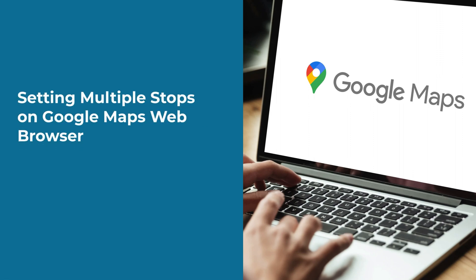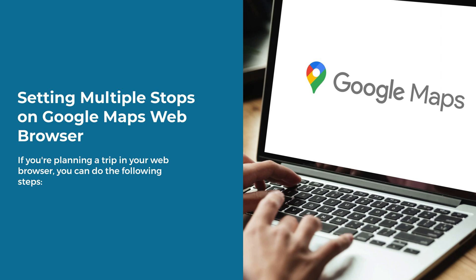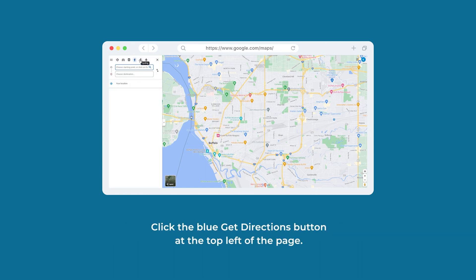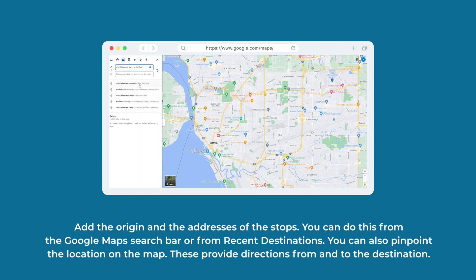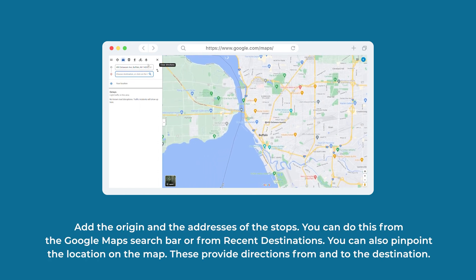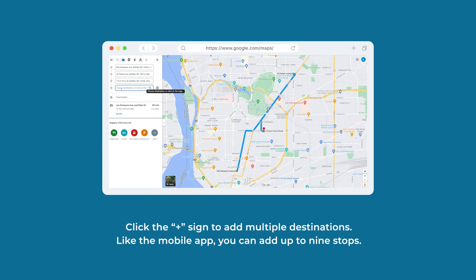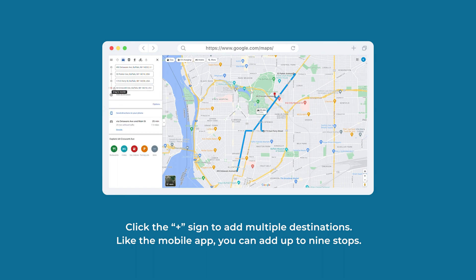Setting multiple stops on Google Maps web browser: if you're planning a trip in your web browser, you can do the following steps. Open google.com/maps in your web browser. Click the blue Get Directions button at the top left of the page. Add the origin and the addresses of the stops — you can do this from the Google Maps search bar or from Recent Destinations. You can also pinpoint the location on the map. Click the plus sign to add multiple destinations. Like the mobile app, you can add up to nine stops.